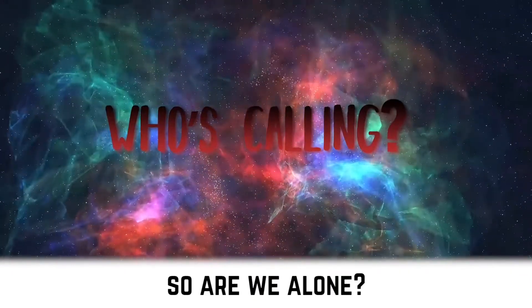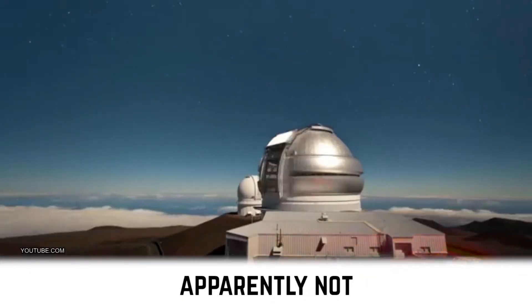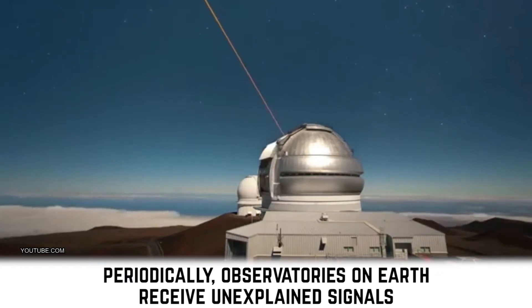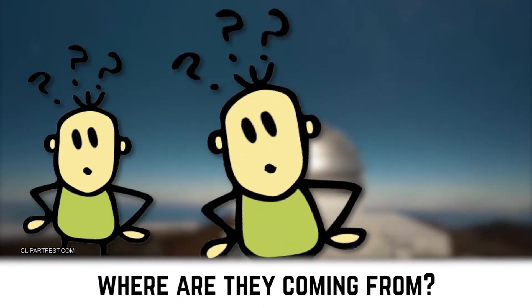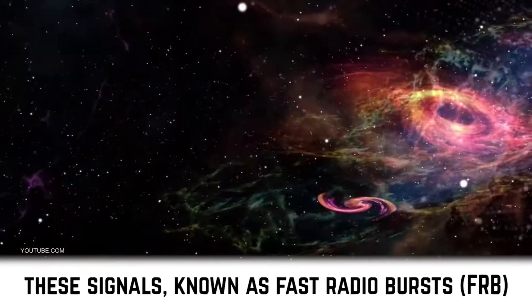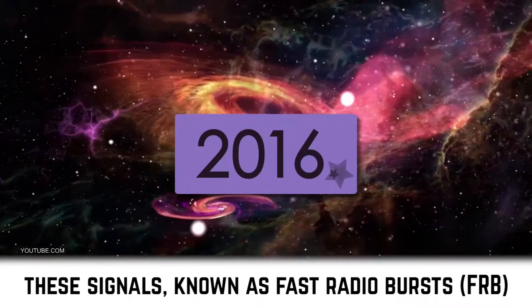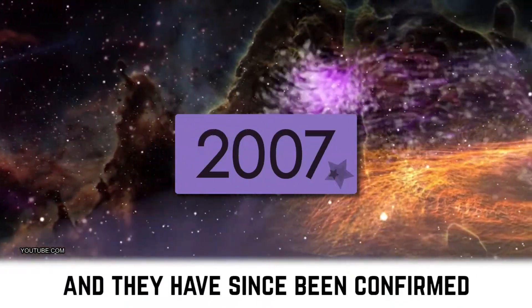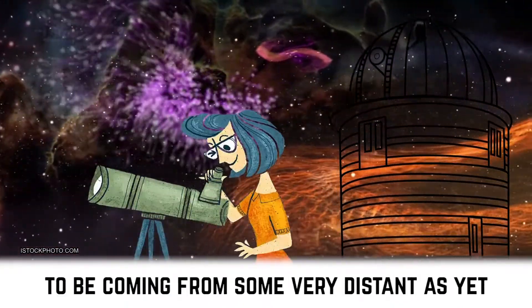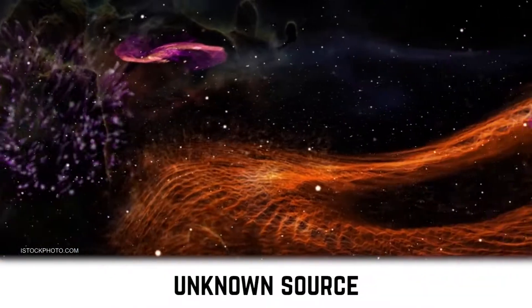So, are we alone? Apparently not. Periodically, observatories on Earth received unexplained signals emanating from deep space. Where are they coming from and what's causing them? These signals known as fast radio bursts were noticed about 10 years ago, and they have since then been confirmed to be coming from some very distant, as yet unknown source.